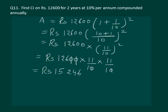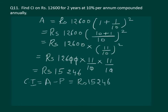But we are asked to calculate compound interest. To find compound interest, we subtract the principal from the amount. The principal borrowed was rupees 12,600. So compound interest equals amount minus principal, which is rupees 15,246 minus rupees 12,600, giving us compound interest of rupees 2,646.